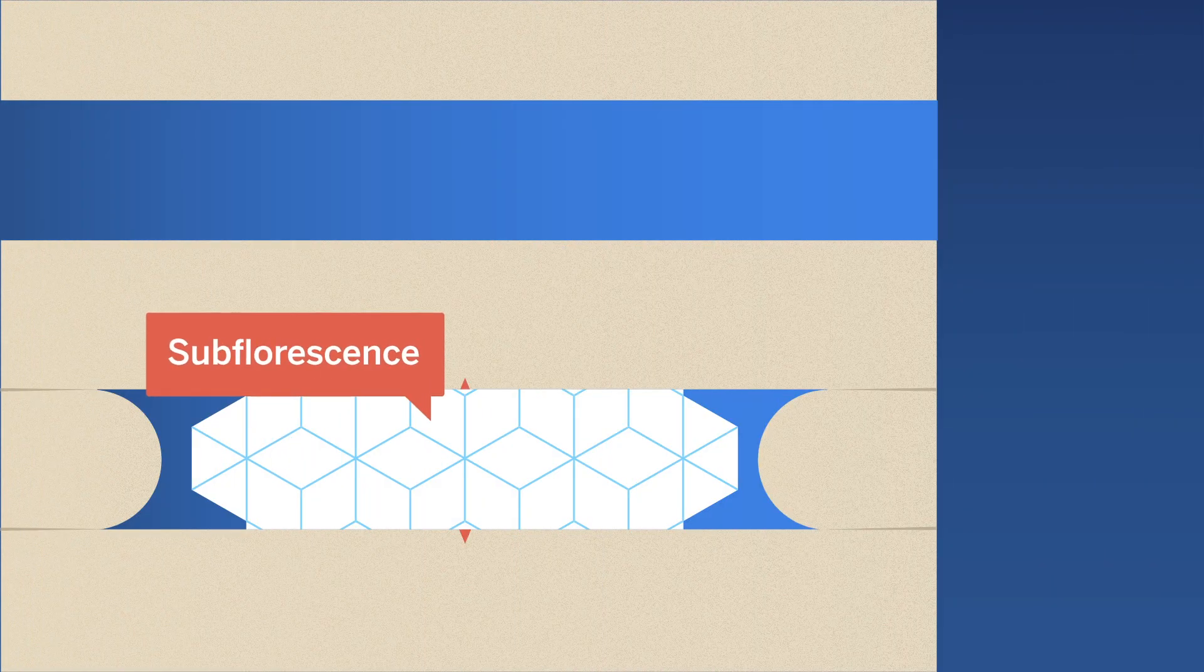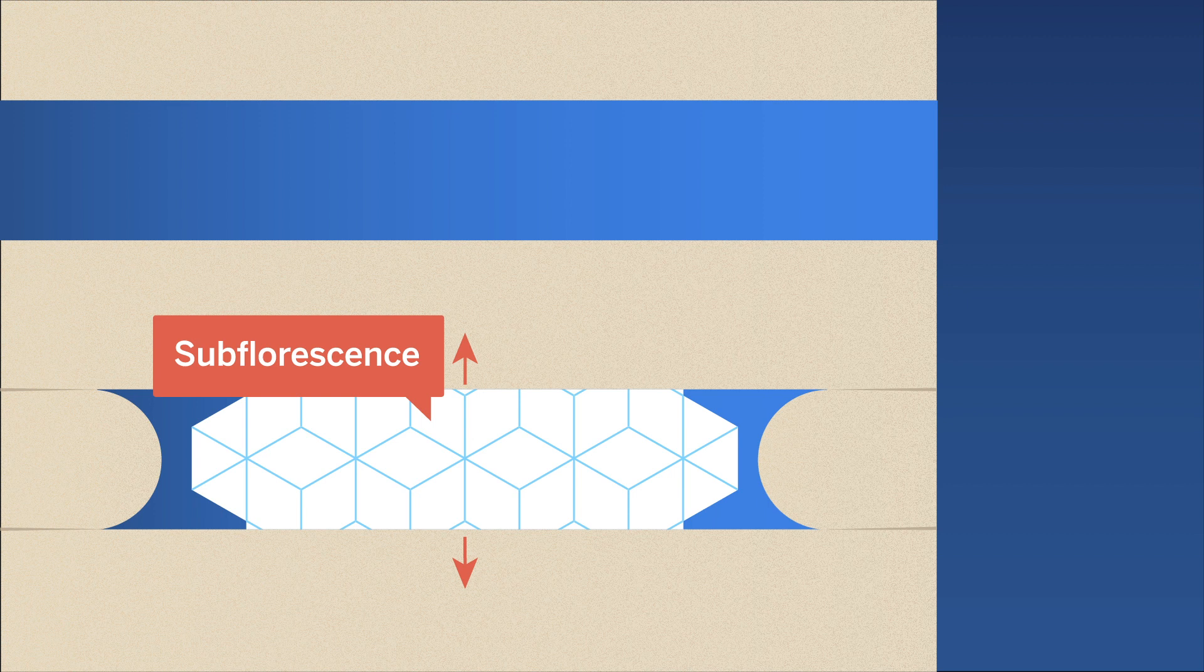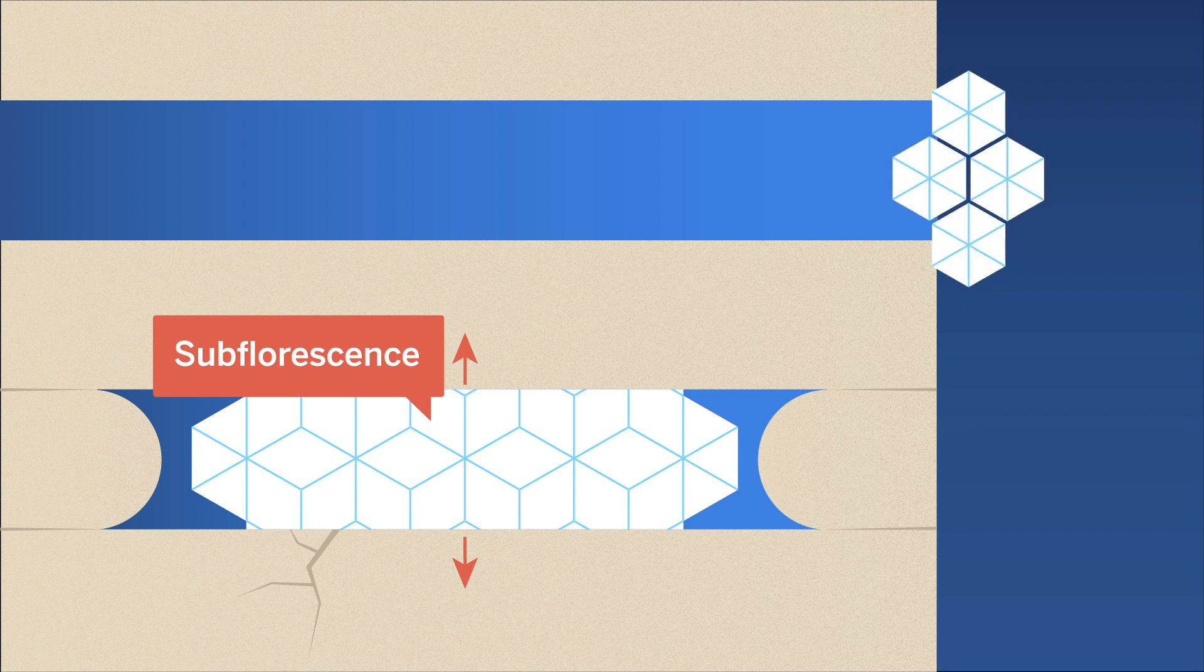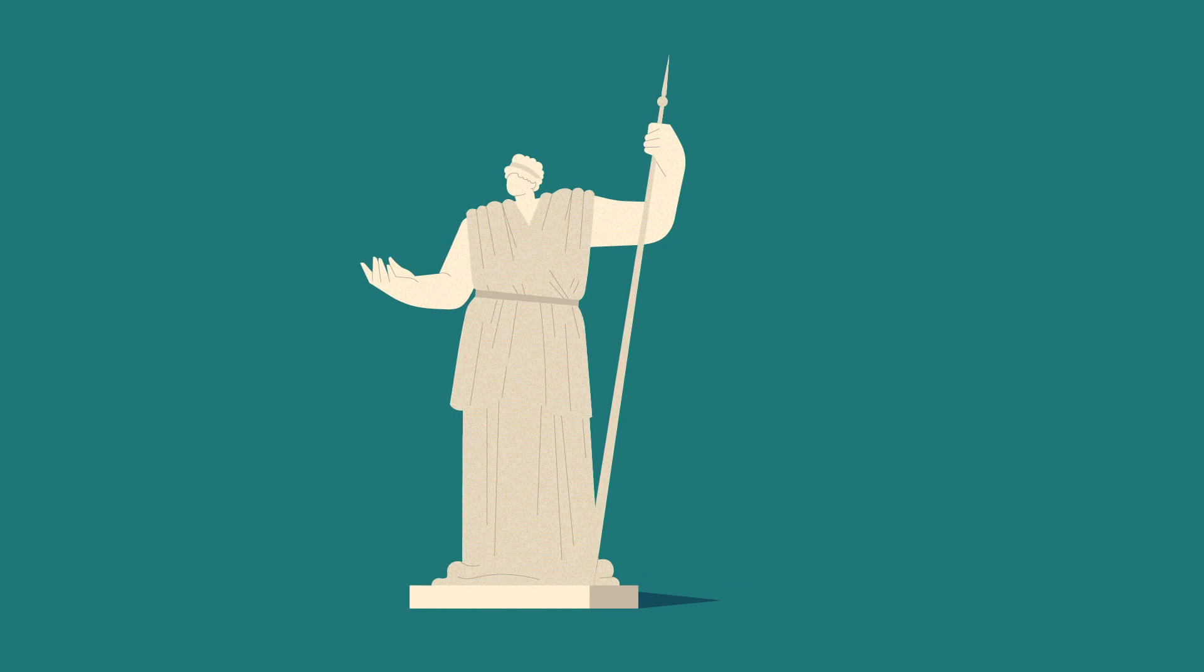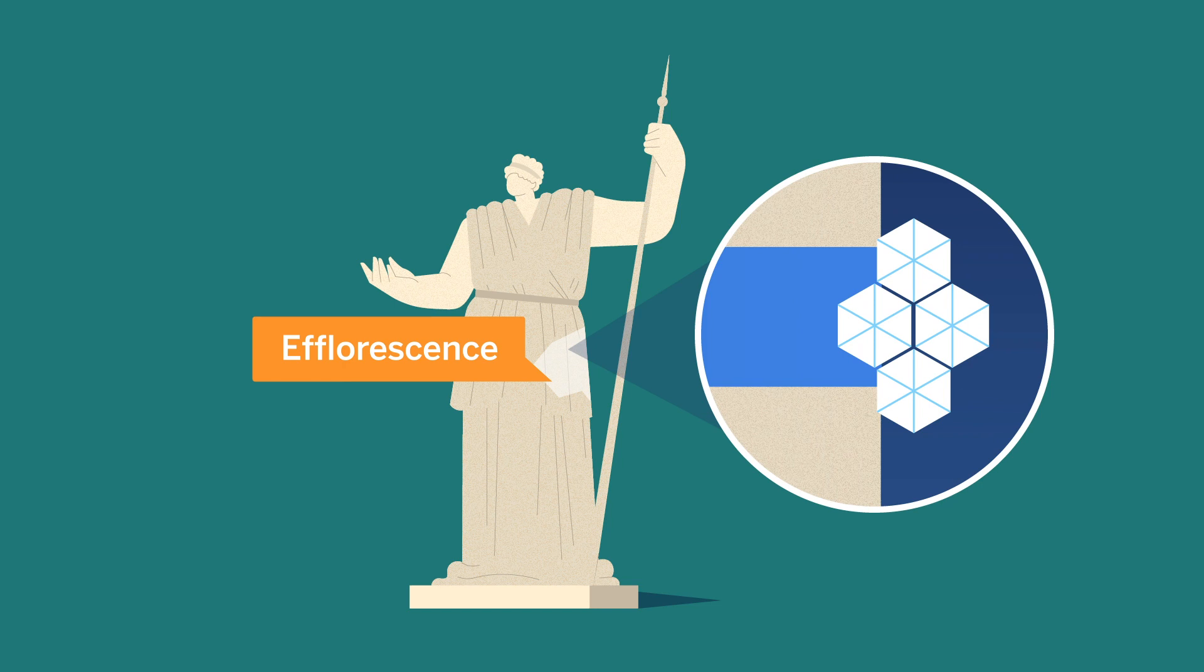This is called subfluorescence and is not visually detectable apart from any damage it may cause. If salts grow on the surface of the masonry, we have efflorescence. Contrary to subfluorescence, it does not damage the stone, but is visually detectable.